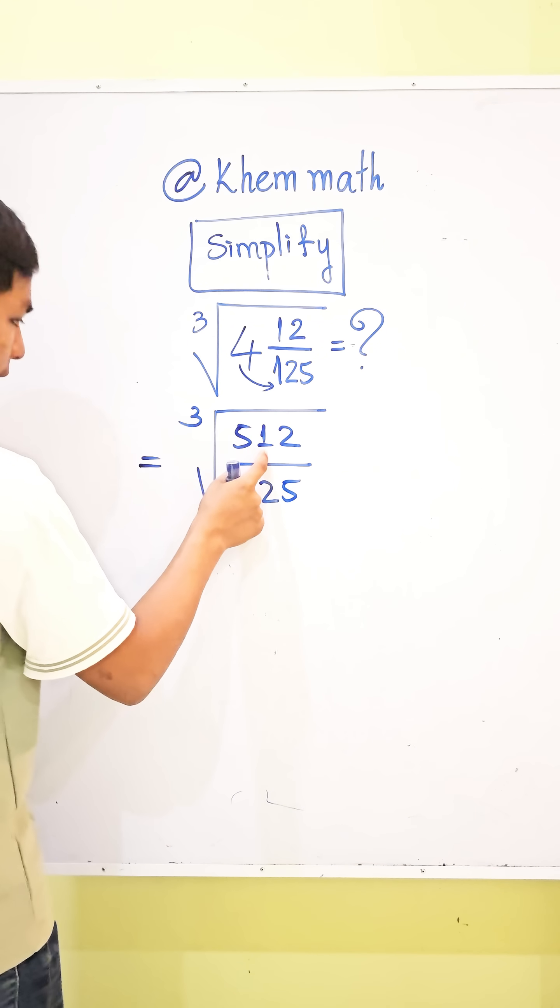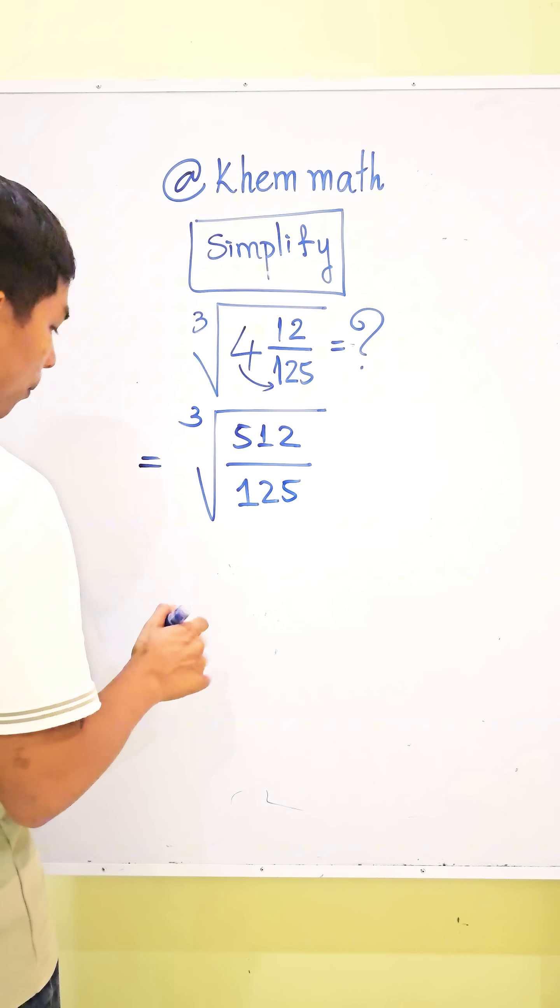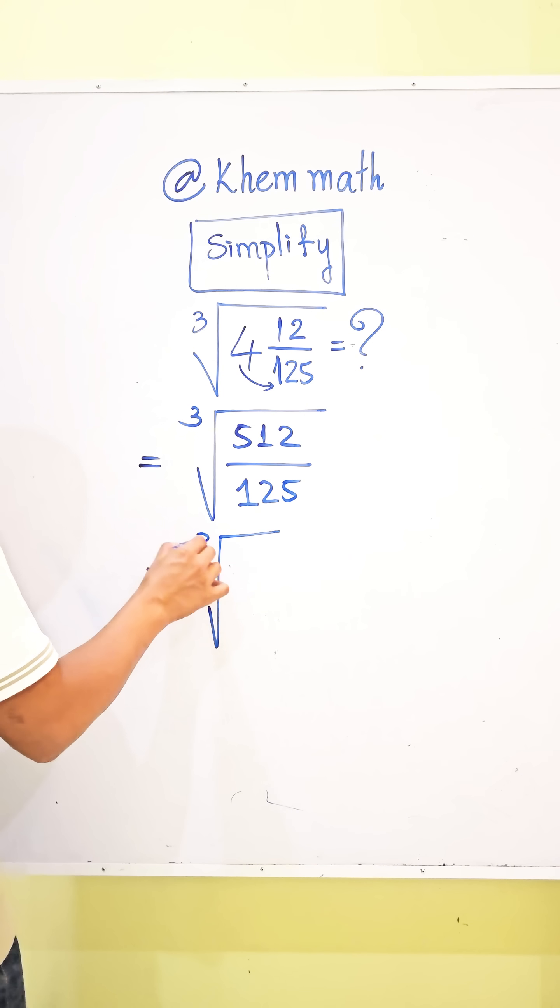512 equals 8 cubed, so we get cube root of 8 cubed divided by 125, which equals 5 cubed.